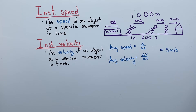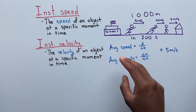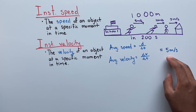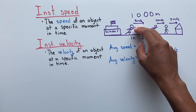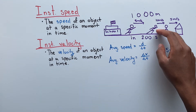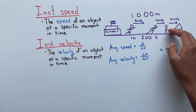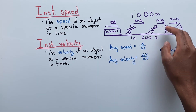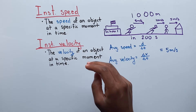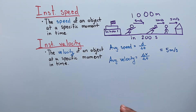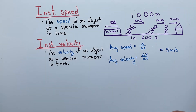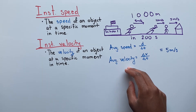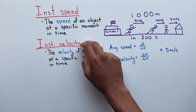However, this does not necessarily mean we kept a constant speed and a constant velocity of 5 meters per second. On the board, you can see that we initially started running at 5 meters per second, then we increased our speed to 10 meters per second, then we decreased our speed to 2 meters per second. These values represent our instantaneous speeds and our instantaneous velocities at those specific moments in time. And even though our initial speed matched our average speed and average velocity, it does not necessarily mean our average speed and average velocity will equal our instantaneous speed and instantaneous velocity.